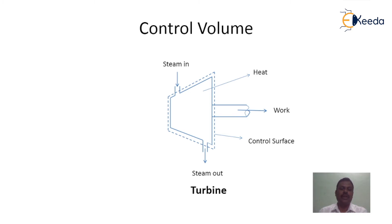To analyze the control volume, a certain region in space surrounding the turbine is considered. Here, the control volume is bounded by the control surface. In this case, the mass — that is, steam — flows continuously across the system boundary. For that reason, a certain region in space surrounding the turbine is considered for the analysis of the problem. This is called as the control volume approach.